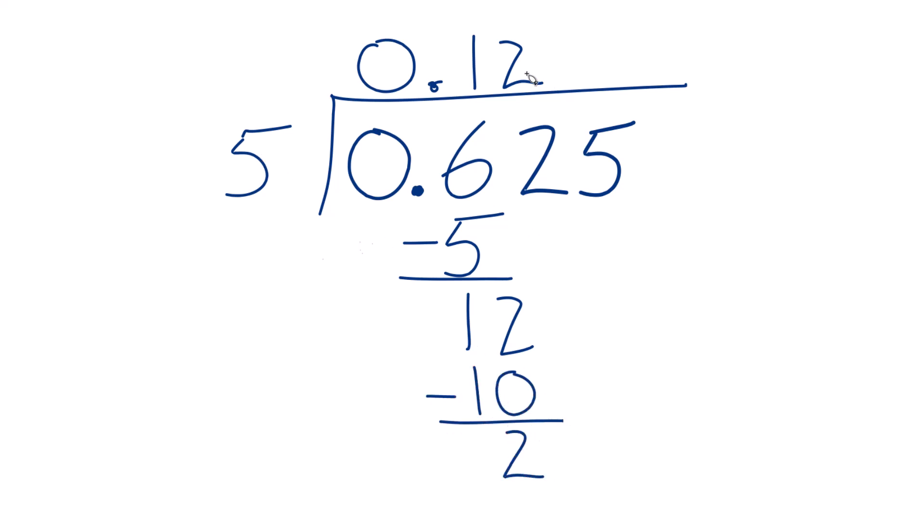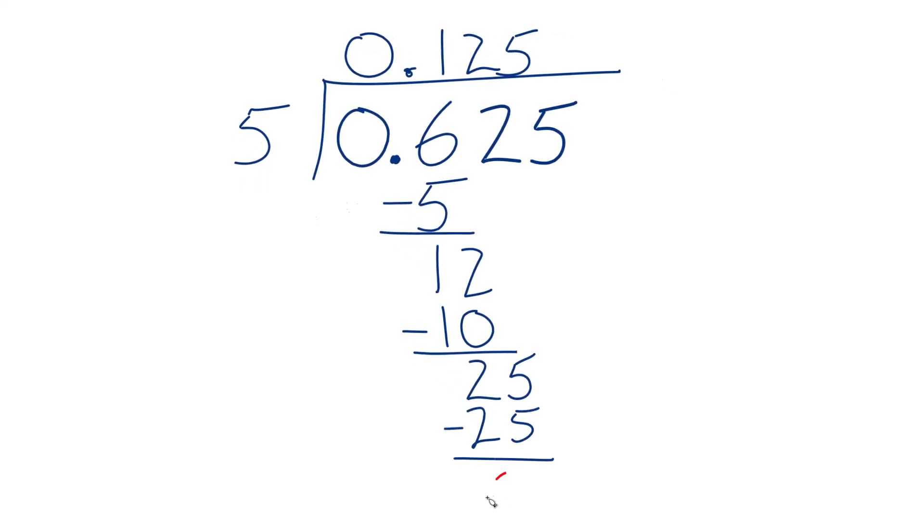5 doesn't go into 2. Let's move over one. Bring that 5 down. And now 5 times 5, that's 25. So 5 times 5 is 25. Subtract, no remainder.